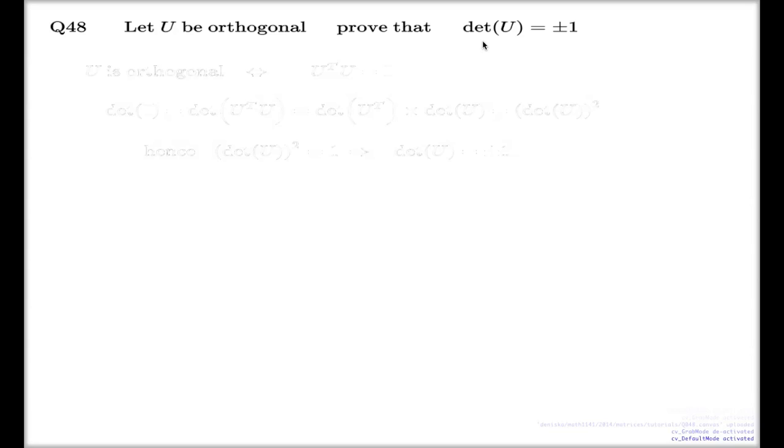It says that every determinant of every unitary matrix is the unital complex number. It's the complex number which sits on the unit circle. But here is the argument.